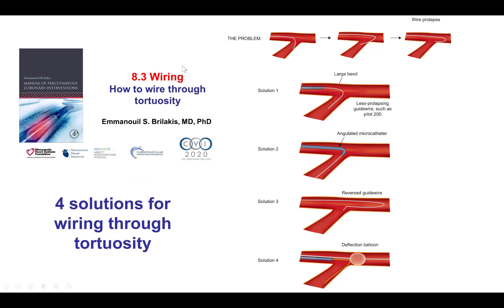How to overcome this? This has been discussed on video 8.3, but these are some of the solutions. One is to put a large bend on a guide wire. Sometimes a polymer-jacketed guide wire may be more likely to advance.